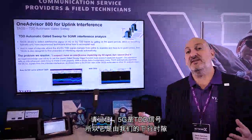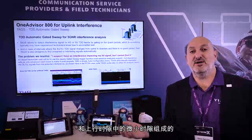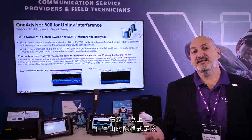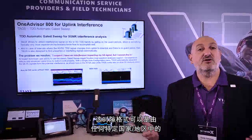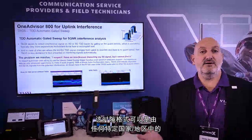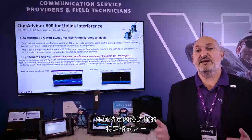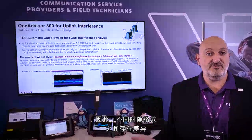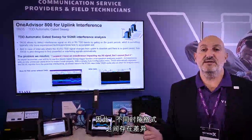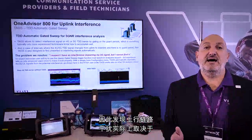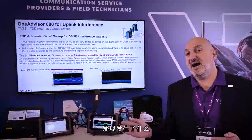Remember, 5G is a TDD signal, so it's made of time slots. Some are downlink slots, some are uplink slots, and the signal is defined by the time slot format, which is chosen by any particular network in any particular country. There are differences between different time slot formats, and hence finding uplink interference really depends on finding where the uplinks are.